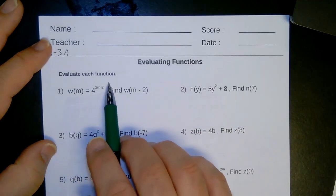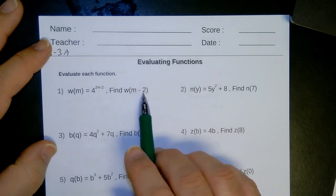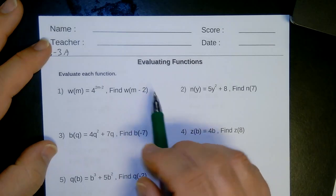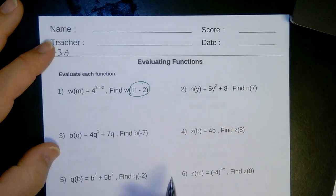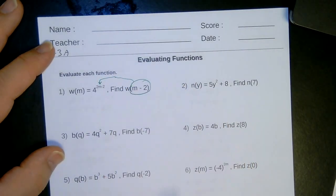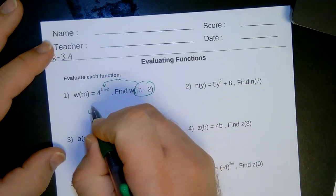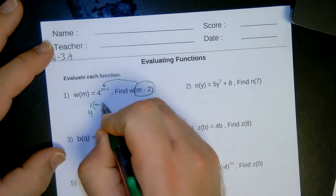So basically we're given a function here. It says find a function when m is, where w is m minus 2. So anywhere where I see an m, I'm putting m minus 2 in there. I'm going to put it in right there for m. Let's see what we have. So we have 4, 2, parentheses, m minus 2.